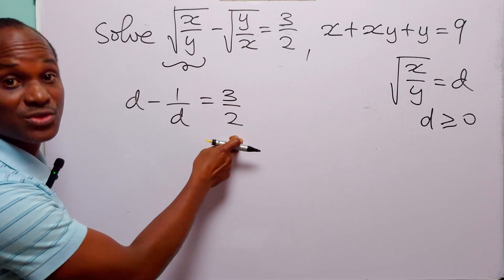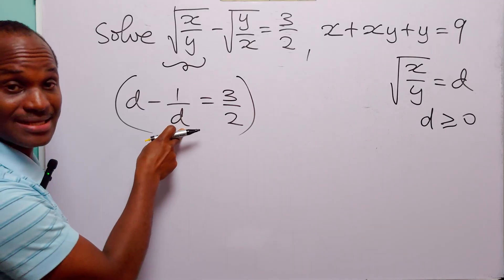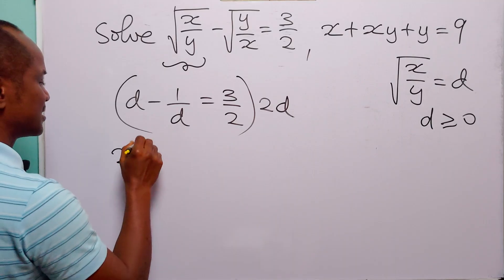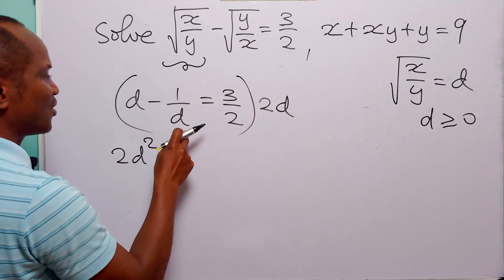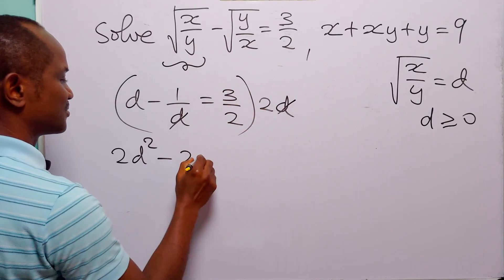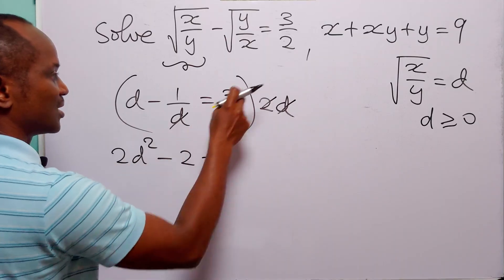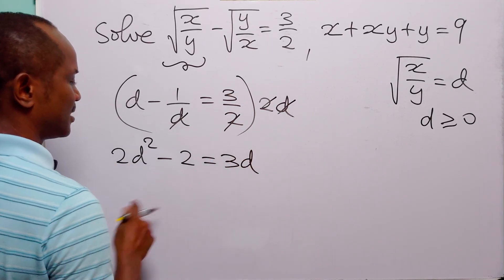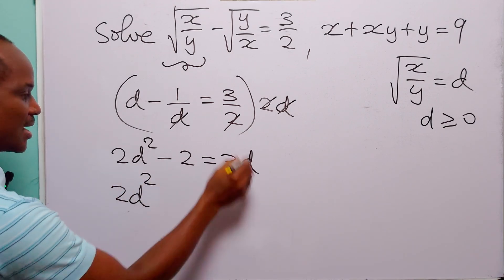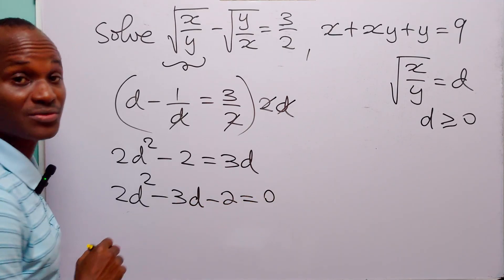To get rid of these two fractions, we are going to multiply through this equation by 2 times d. d times 2d is 2d squared. 1 over d times 2d — this will cancel — giving us 3d. Rearranging, we have 2d squared minus 3d minus 2 is equal to zero.